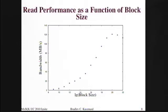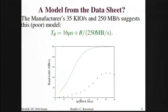I measured for varying block sizes going from very small to something like four megabytes. The bandwidth I got started out very low and got up to 120 megabytes per second on reads. This was on a machine that was supposed to get 250 megabytes per second, so I wasn't getting that. What would this curve look like if the model matched the data sheet — that is, 16 microsecond startup time plus 250 megabytes per second? This is what the curve ought to look like, but this is what the curve really did look like.